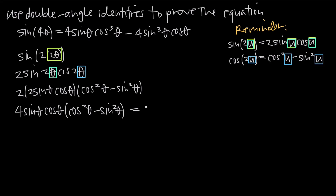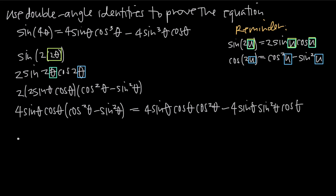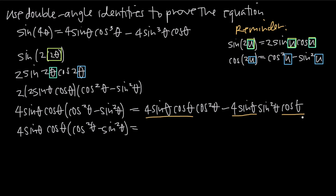Here's what that looks like. We'll keep the 4 sine theta. Cosine cubed is just cosine times cosine times cosine, so we can group two of those factors together and leave one alone: cosine theta times cosine squared theta. We'll split apart the sine cubed in the same way: minus 4 sine of theta times sine squared of theta, times cosine theta. Now I want to factor out 4 sine theta cosine theta. Notice that both terms include a factor of 4 sine theta cosine theta.